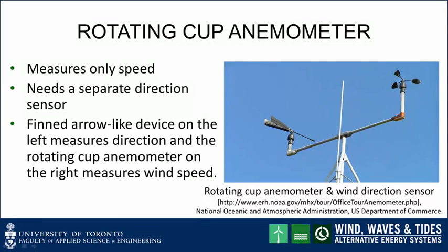A second type of wind measuring device is the rotating cup anemometer, shown on the right. This device measures only wind speed and isn't direction sensitive, so there is a sensor here to measure the rotating speed. The finned arrow-like device on the left measures direction. The fins keep the sensor pointed into the wind, and a rotary position sensor in the pivot provides wind direction information.